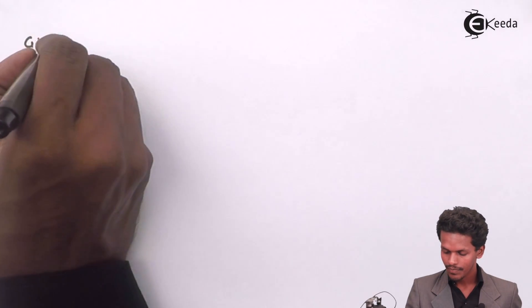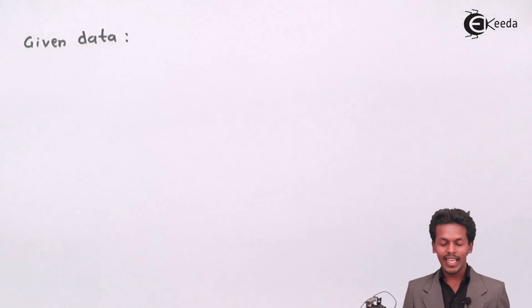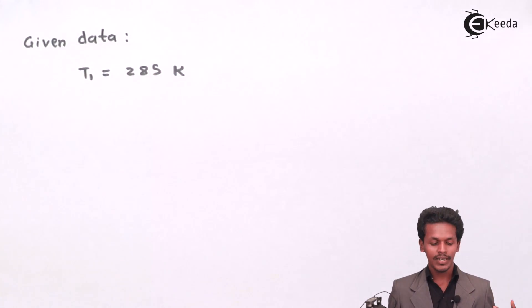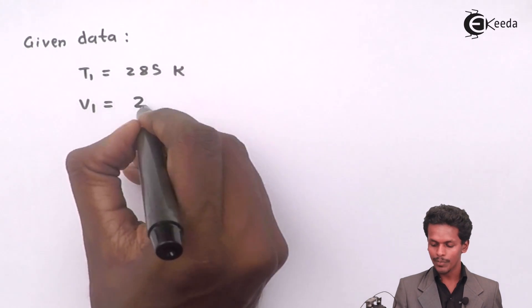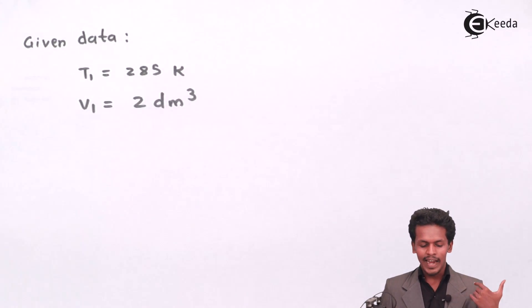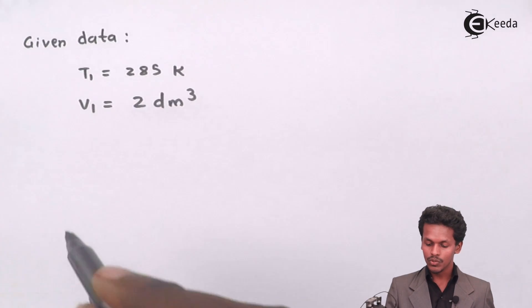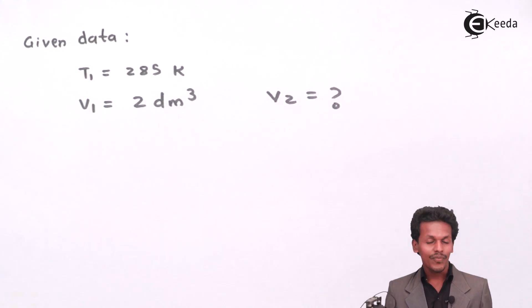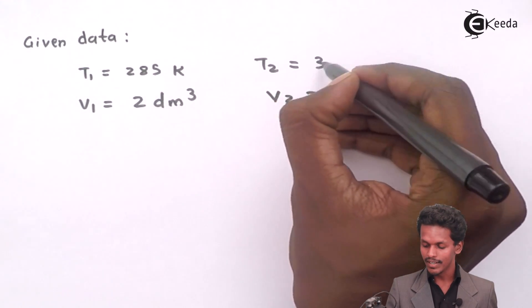From the given data: the temperature T1 is 285 Kelvin, and at this temperature the volume V1 is 2 dm³. We have to calculate V2, the volume of the same gas when the temperature T2 is raised to 300 Kelvin.